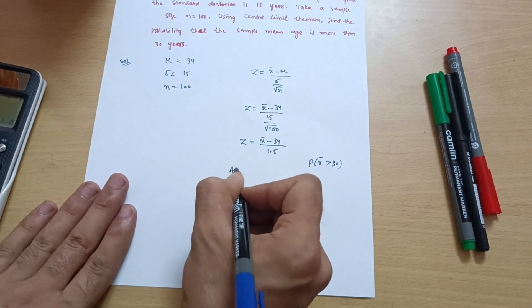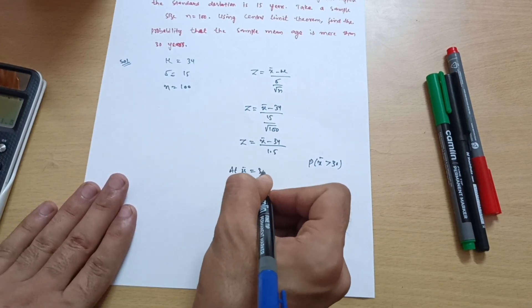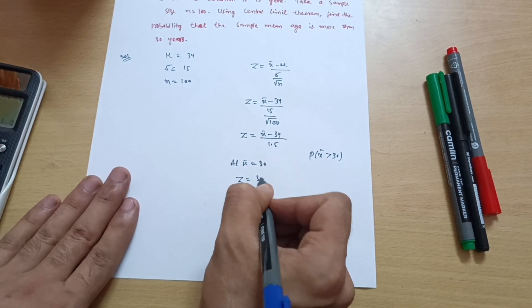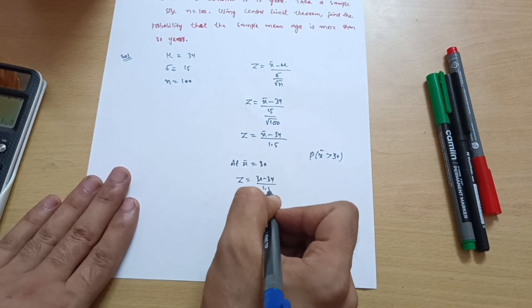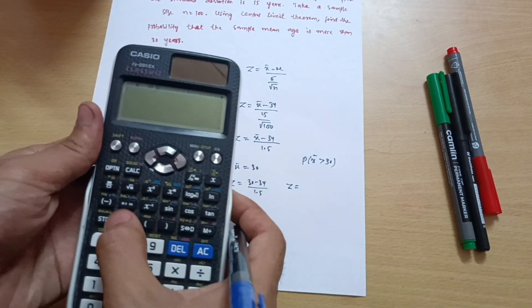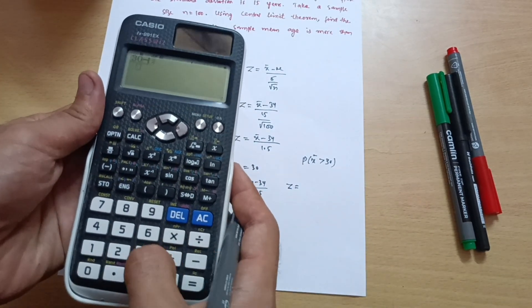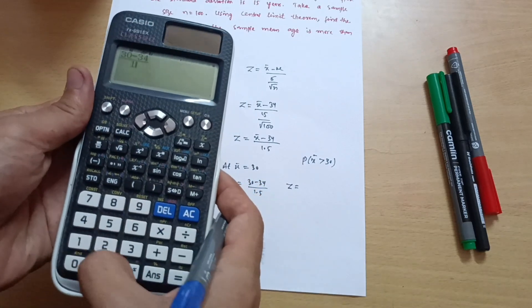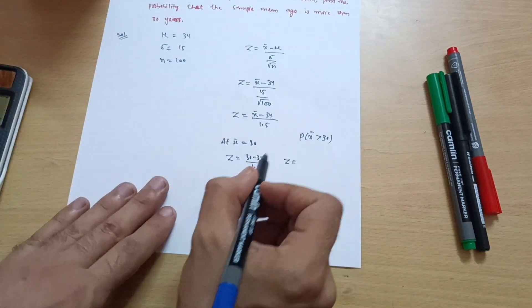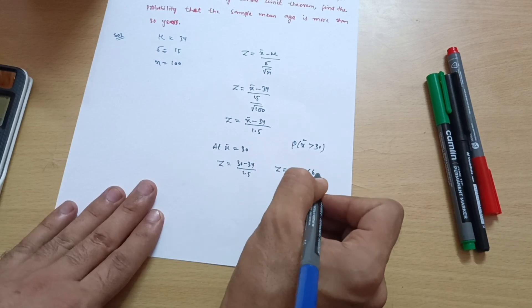So I can write, at x̄ equals 30, z equals 30 minus 34 upon 1.5. So z equals 30 minus 34 divided by 1.5, which is equal to minus 2.66. So minus 2.66 is the z value.